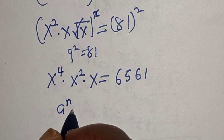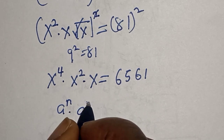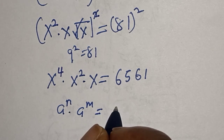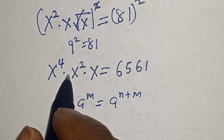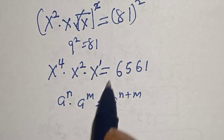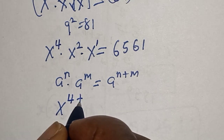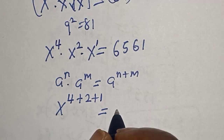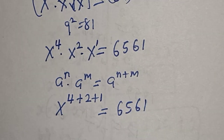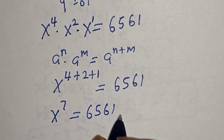Then the left-hand side — remember this rule: a to the power of n, multiplied by a to the power of m, is equal to a to the power of n plus m. Then x to the power of 4, multiplied by x squared, multiplied by x to the power of 1, is x to the power of 4 plus 2 plus 1, which is equal to 6561. And this gives us x to the power of 7 is equal to 6561.